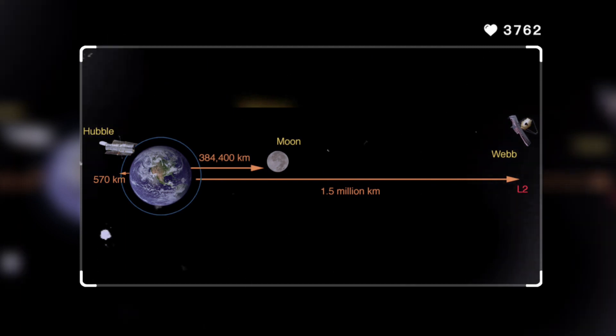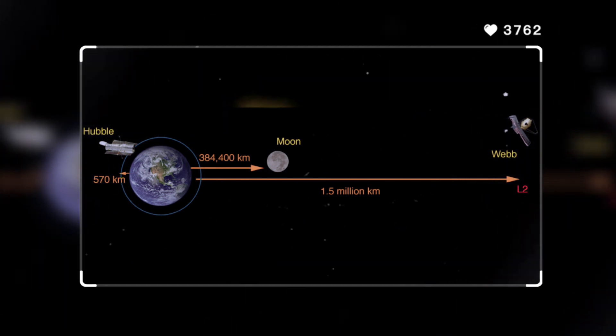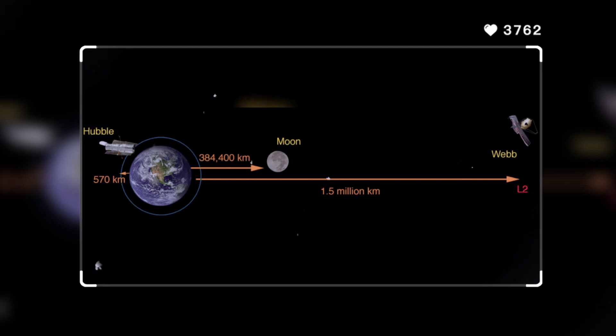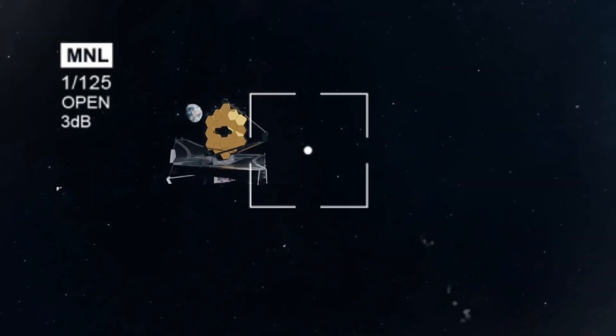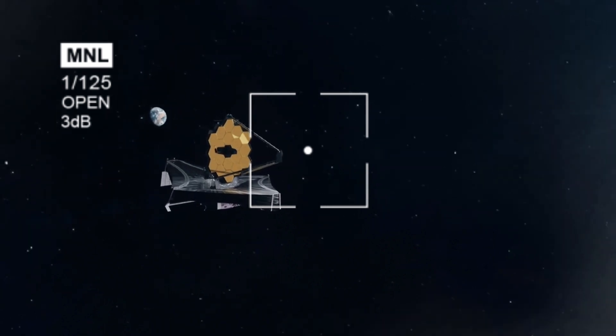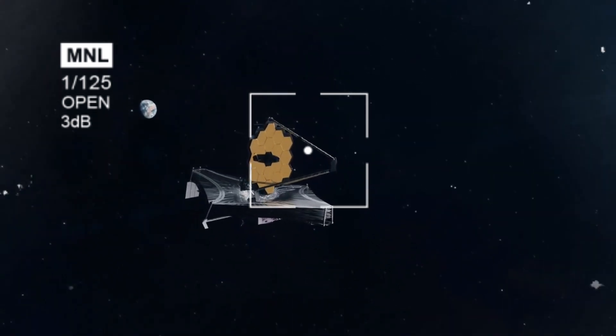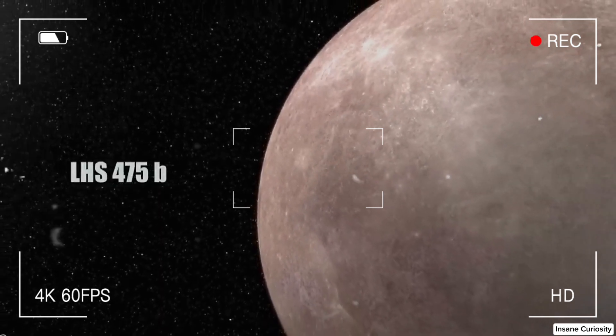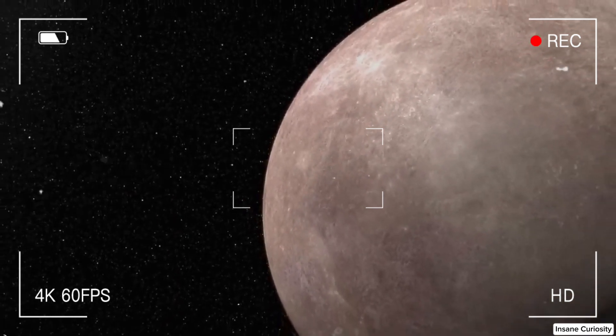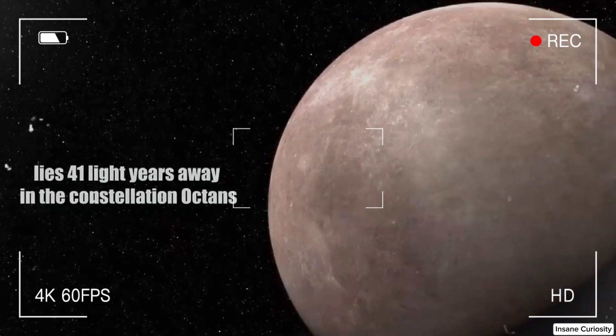The James Webb Telescope, positioned around 1 million miles from Earth as an infrared observatory orbiting the Sun, plays a crucial role in detecting and analyzing exoplanets' atmospheres, seeking indicators of life beyond our planet. The initial exoplanet pinpointed by the Webb Telescope was LHS 475b, a rocky planet nearly Earth's size.